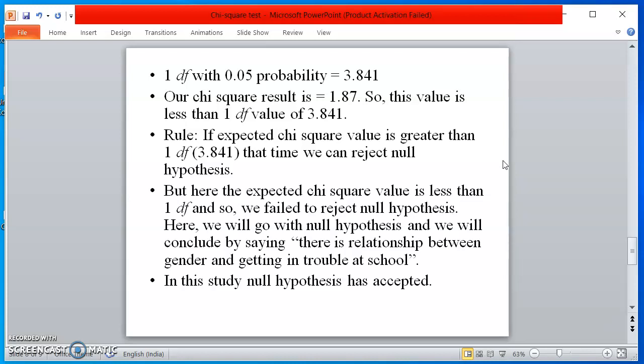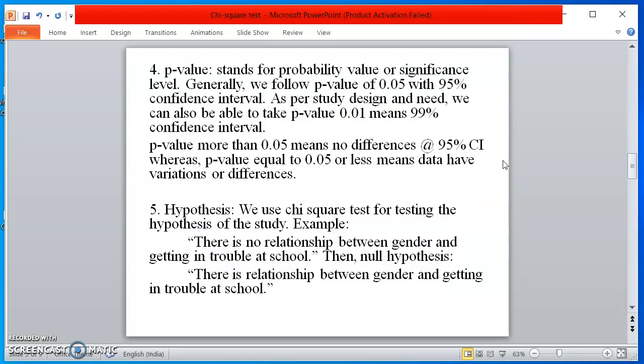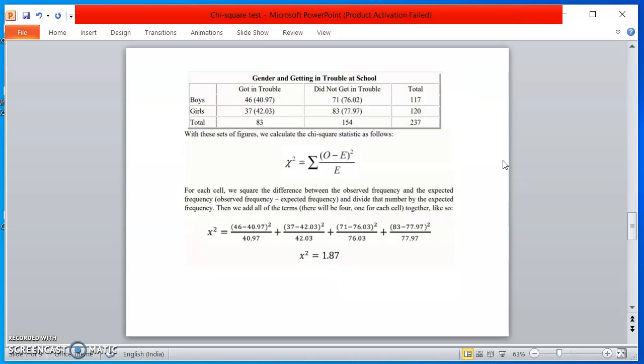So what in this study are the things that we are going to accept? We are going to accept that there is a relationship between gender and getting in trouble at school. It doesn't matter whether we accept our hypothesis or we accept our null hypothesis. In social science, it is not a very big issue.